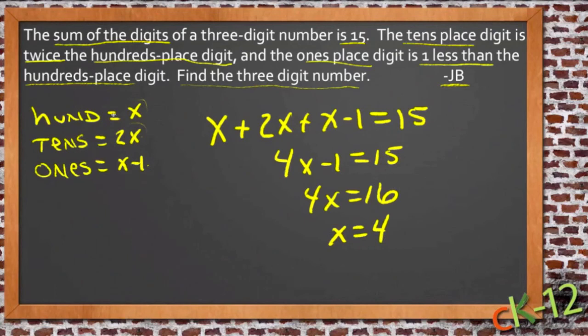So if x equals 4, then that means our hundreds place digit is 4. Now the tens place digit is twice as big as that, so that's 8. And the ones place digit is the hundreds minus 1, so it's 4 minus 1, that's 3. So then our number should be 483.